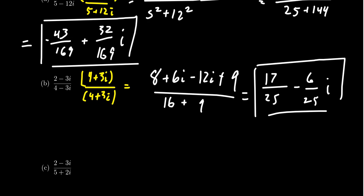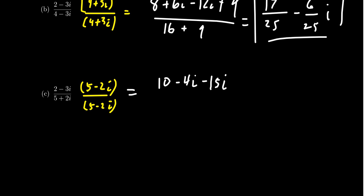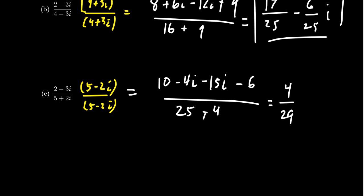Let's do one more example. If you want to divide 2 minus 3i by 5 plus 2i, you multiply top and bottom by the conjugate 5 minus 2i. FOILing the numerator: 2 times 5 is 10, 2 times negative 2i is negative 4i, negative 3i times 5 is negative 15i, and negative 3i times negative 2i gives positive 6 times i squared, which is negative 6. The denominator is 5 squared plus 2 squared, equaling 25 plus 4 equals 29. Combining: 10 minus 6 is 4, and negative 4 minus 15 is negative 19. So the quotient is 4 over 29 minus 19 over 29 i.